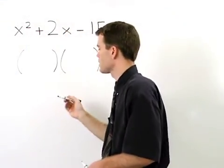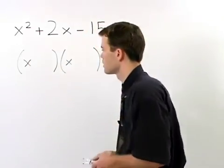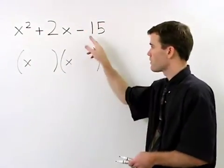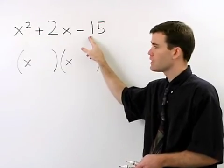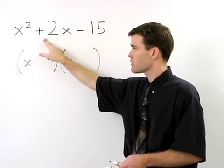x squared breaks down into x times x, and what we're looking for are the factors of negative 15 that add to positive 2.